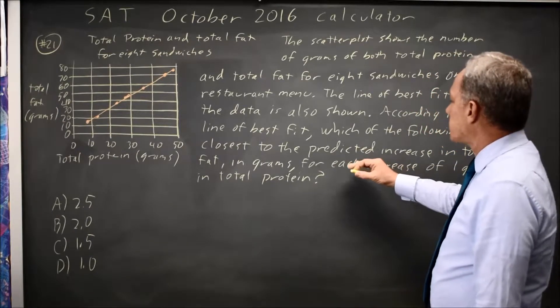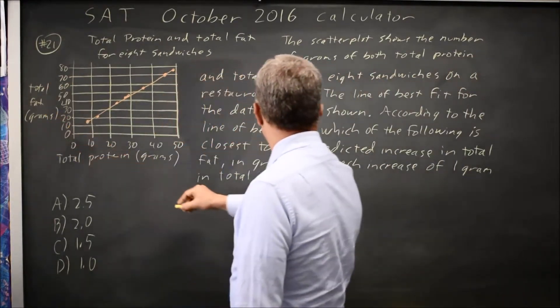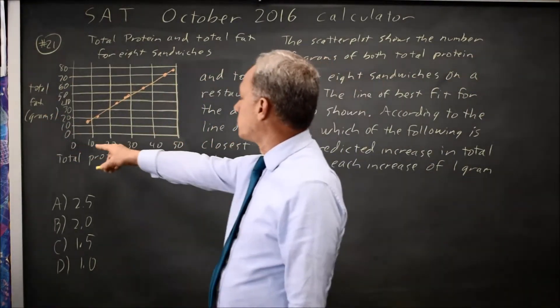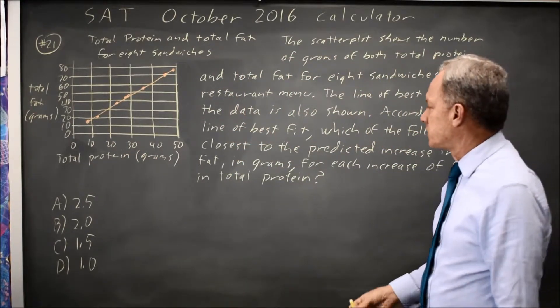what's the predicted increase according to the line of best fit in total fat, that's the change in Y, for each increase of one gram in total protein, that's the change in X. So they're asking for the slope, change in Y over change in X.